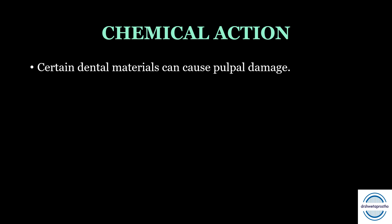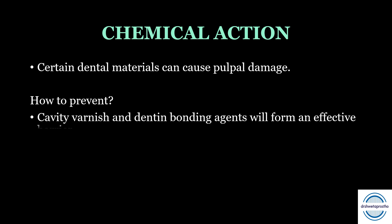Second is chemical action. The chemical action of various dental materials we use — that is, bases, restorative resins, solvents, and luting agents — can cause pulpal damage. To prevent this, cavity varnish and dentine bonding agents can form an effective barrier and reduce the chemical action.